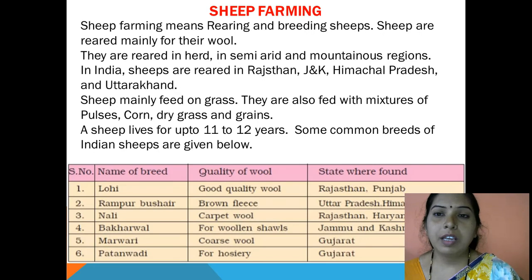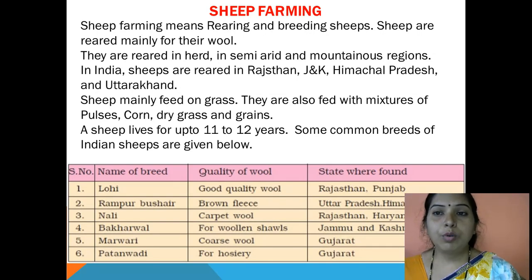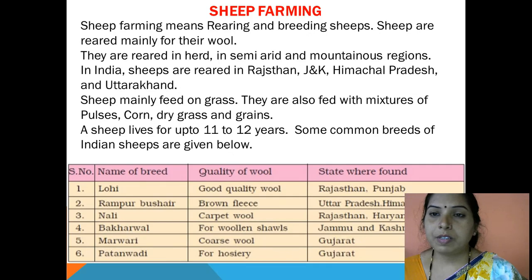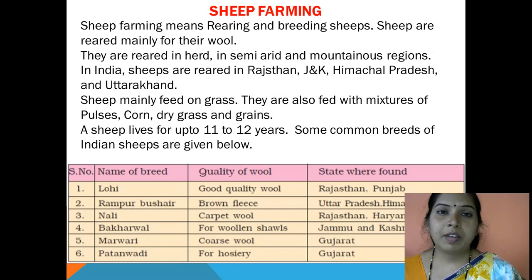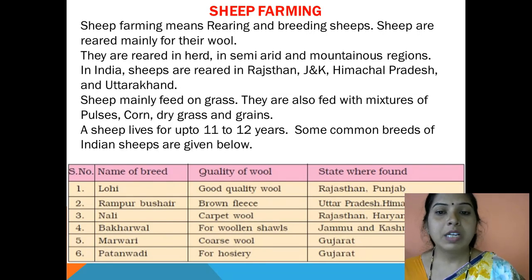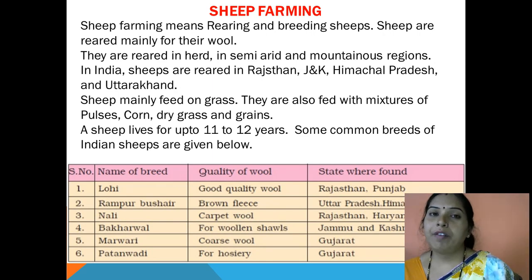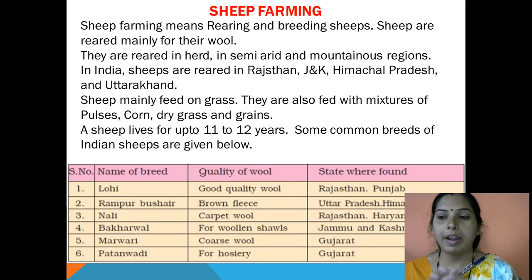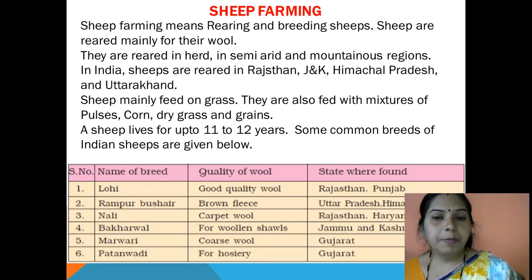For obtaining good quality wool it is necessary to do sheep farming. Sheep farming means rearing and breeding sheep — rearing means keeping them like pet animals. Sheep are reared mainly for their wool, in herds in semi-arid and mountainous regions. In India, sheep are reared in Rajasthan, Jammu & Kashmir, Himachal Pradesh and Uttarakhand. Sheep mainly feed on grass, but are also fed mixtures of pulses, corn, dry grass and grains. The lifespan of a sheep is up to about 11 to 12 years.